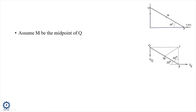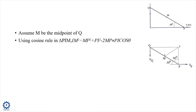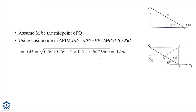To find velocity at midpoint M of bar PQ, we determine IM using the cosine rule in triangle PIM: IM² = MP² + IP² − 2·MP·IP·cosθ. Substituting gives IM = 0.5 m. Therefore vm = omega × IM = 10 × 0.5 = 5 m/s.